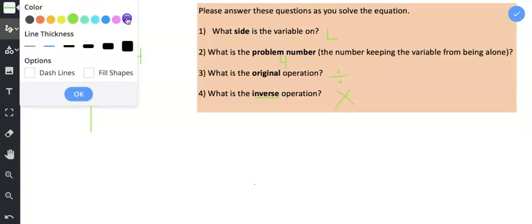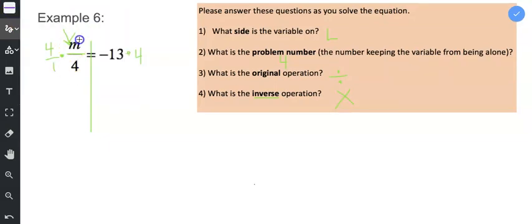And then I want you to recall that when you're multiplying with fractions, you multiply the numerators together. 4 times M is 4M. And then you multiply the denominators together. 1 multiplied by 4 is 4.